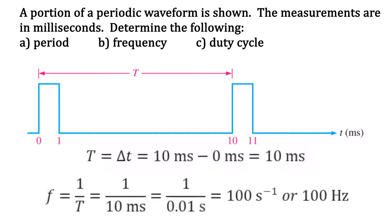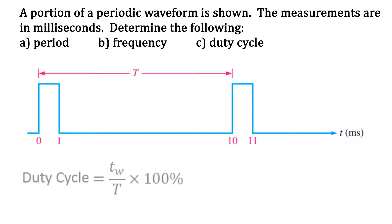Our last task is to find the duty cycle. The duty cycle is pulse width divided by the period times 100%. So now we need to see what the pulse width is.